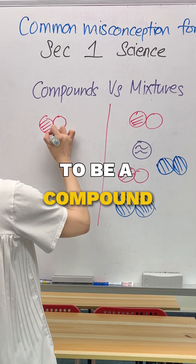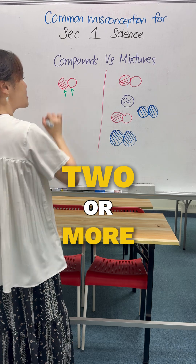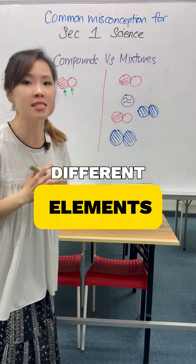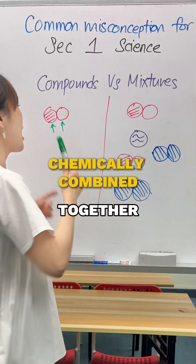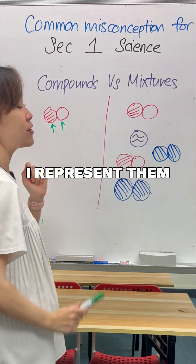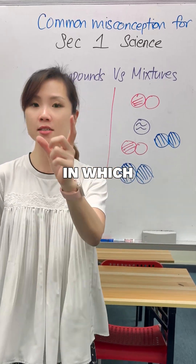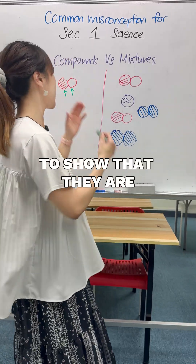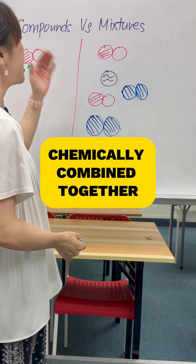Now, to be a compound, you are made up of two or more different elements that are chemically combined together. I represent them using circles here, in which the circles are stuck together to show that they are chemically combined together.